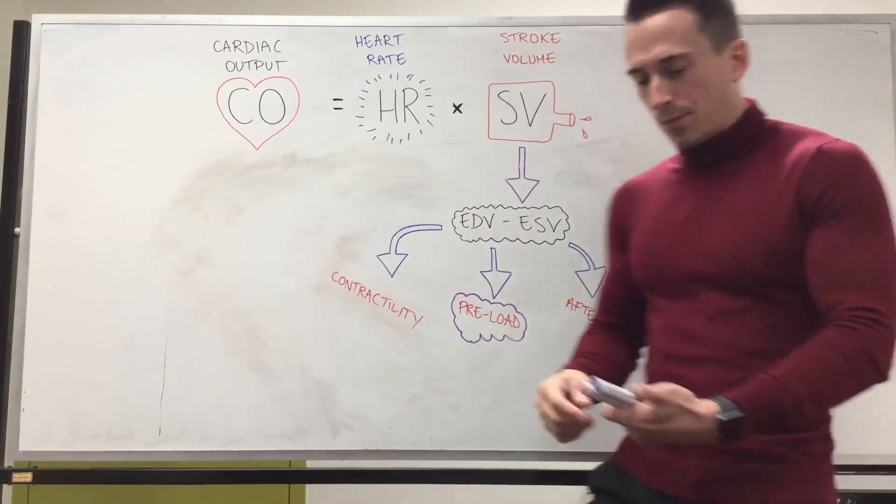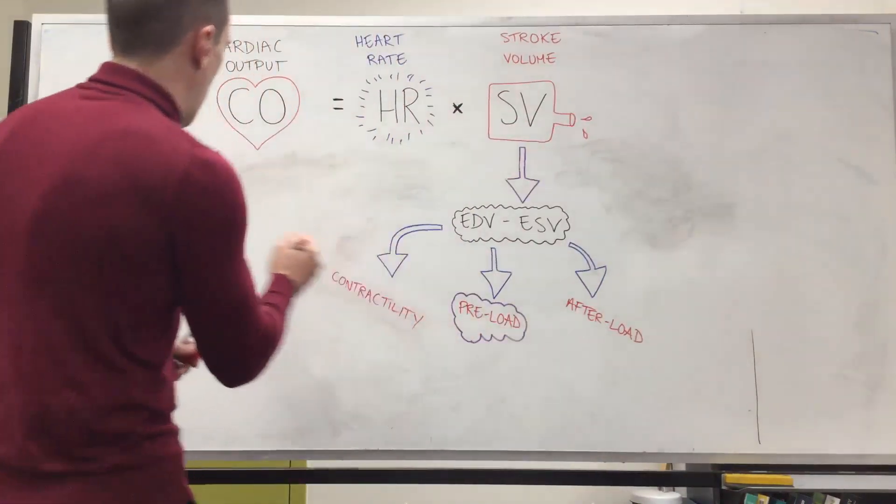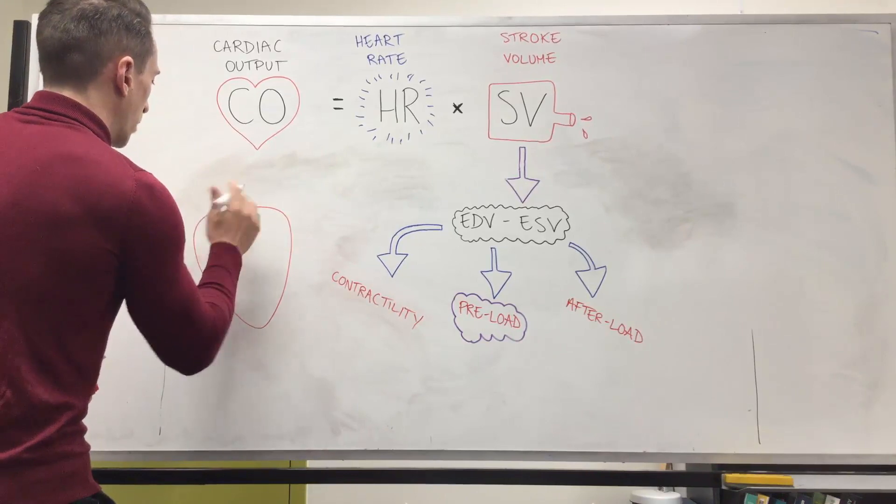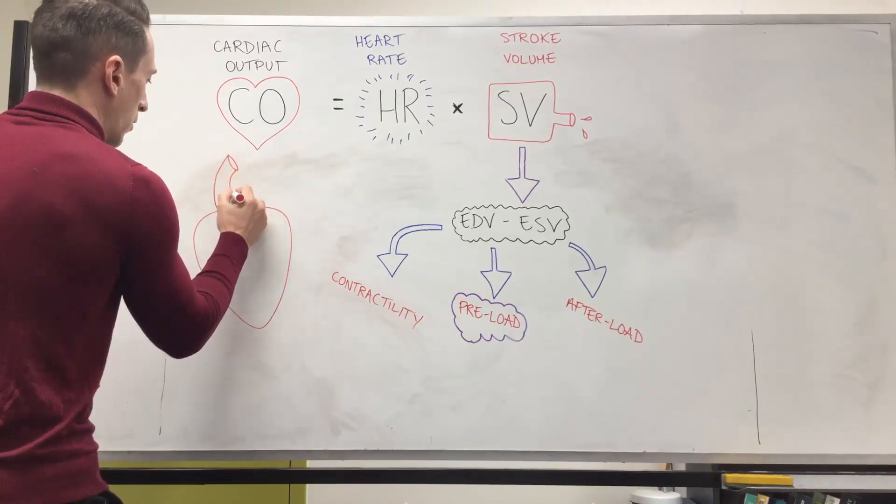Alright, preload, what is it? Well first thing I need to draw up is a heart and when we have our heart we're also going to have some blood vessels but the only one I'm going to draw up here is going to be the aorta.